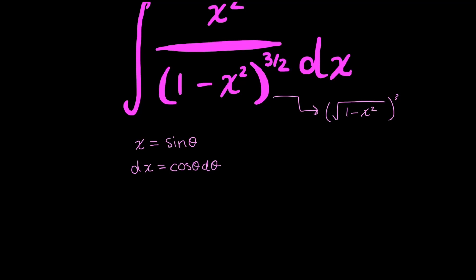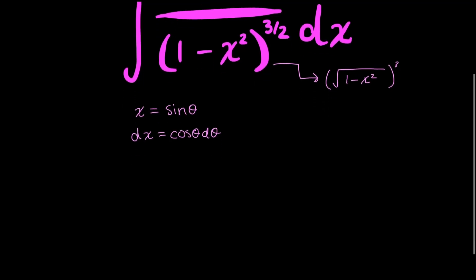And now I could go ahead and substitute everything into my integral. So x squared, I'll write this as sine squared theta over the square root of 1 minus sine squared theta, all raised to the power of 3. And then don't forget that dx is cosine theta d theta.